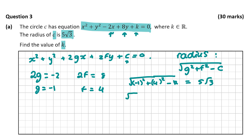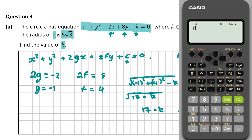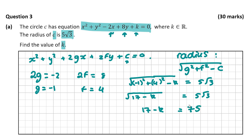So we have the square root of 1 plus 16 minus k equal to 5 root 3, giving us the square root of 17 minus k equal to 5 root 3. Let's square both sides. The left-hand side becomes 17 minus k. Using the calculator with brackets to square the whole 5 root 3, the right-hand side is 75. So minus k equals 75 minus 17, which is 58. Therefore k equals minus 58, and that is our final answer.